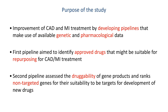In the paper under discussion, the authors hypothesized that they could utilize genetic information and pharmacological data to facilitate drug development for CAD and MI. Using numerous sources of information made publicly available in the past few years, the authors developed two pipelines: the first aimed to identify approved drugs suitable for repurposing, while the second assessed the drugability of gene products and ranked non-targeted genes for suitability as targets for new drug development.